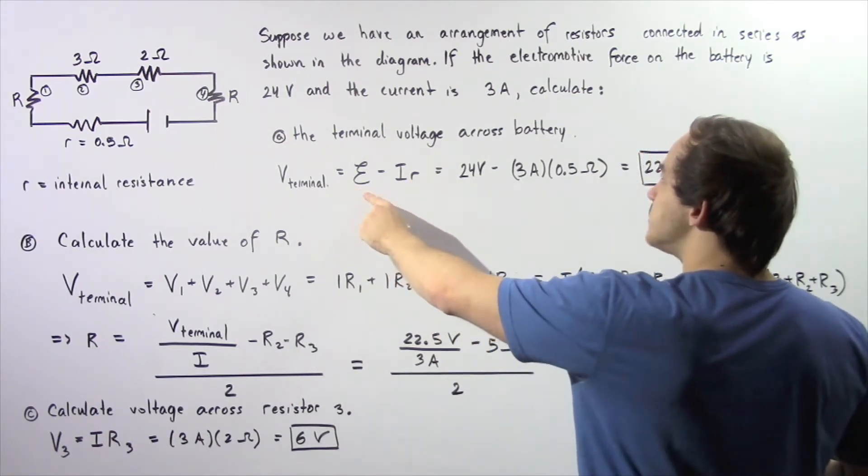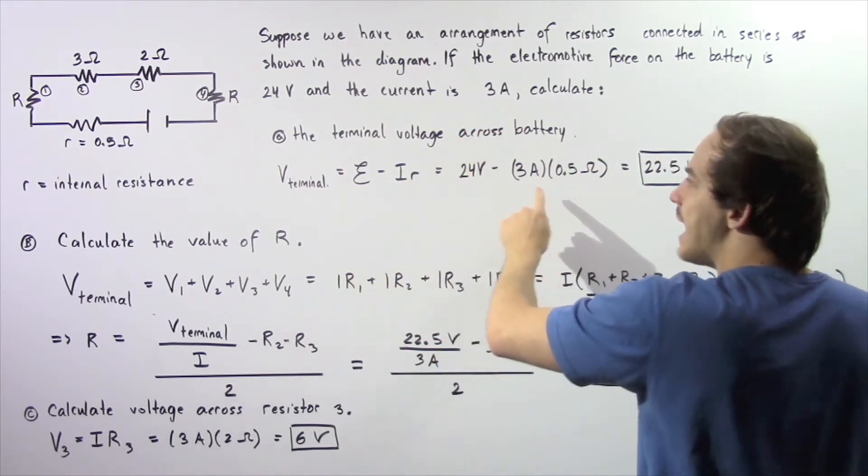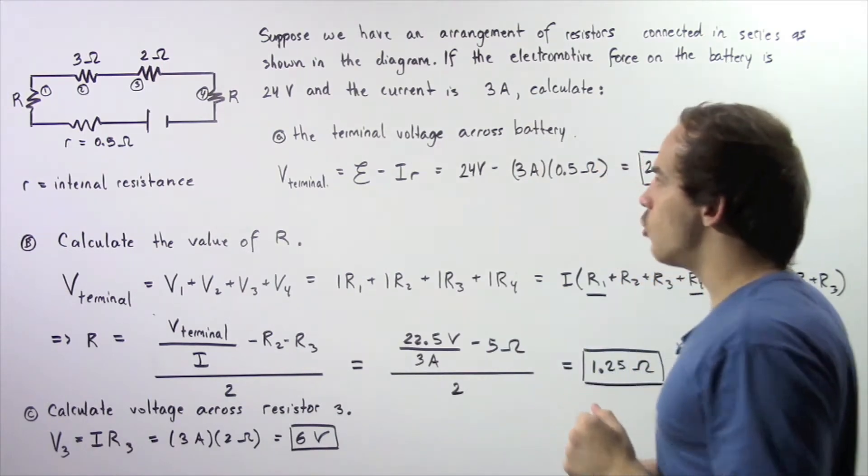So the electromotive force is given to be 24 volts. The I is 3 amps and our lowercase r is 0.5 ohms.